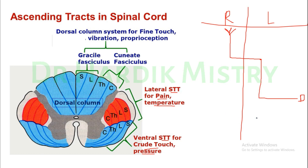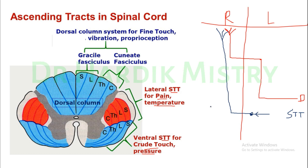In the spinothalamic tract, the afferent fibers that enter the spinal cord cross to the opposite side at the same level, and then ascend and go to the different areas of the brain. This is the key difference between the spinothalamic tract and the dorsal column system.